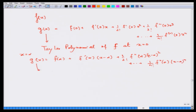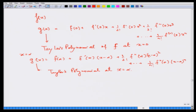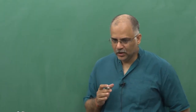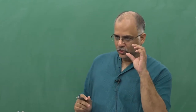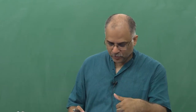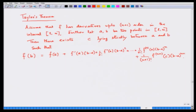This is called the Taylor polynomial at x = α. That is just wonderful. Now we are going to formally state what is Taylor's theorem. Once we state that, it would be easier to understand what we are trying to do. You observe that if I want to compute the value of a function at a given point by taking a base as some other point, then I can approximate it by a Taylor polynomial.